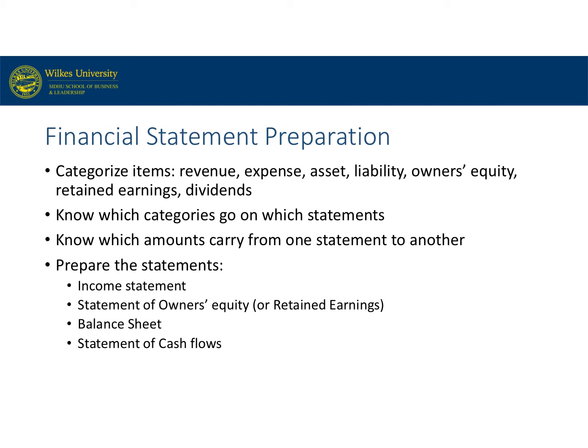Dividends reduce retained earnings because we're giving the owners a piece of the prior earnings. After you categorize all the items and know which items go on which statement, as well as which items carry from one statement to another, we can prepare the statements. It's easiest to start with the income statement, because the net income or loss goes to the statement of retained earnings. The cash balance on the balance sheet is carried to the statement of cash flows.